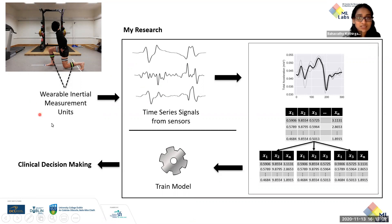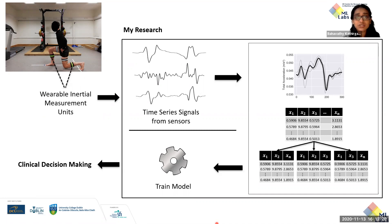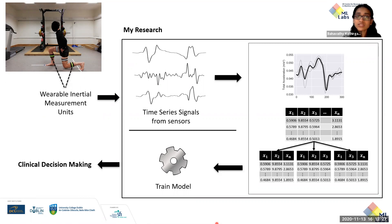Wearable sensors such as inertial measurement units or IMUs allow us to digitally capture the key features of these exercises as motion capture data, which can then be used to train models to characterise the various stages of recovery of the athlete, which in turn can help clinicians to make better informed decisions on when an athlete is ready to return to play.